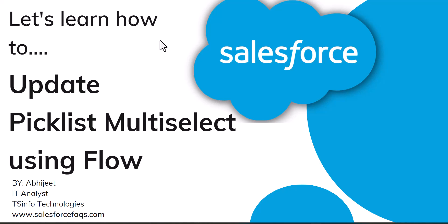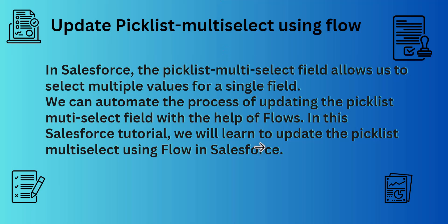Hello everyone and welcome to the channel. Today in this video we will learn how we can update a multi-select picklist value using the Salesforce record trigger flow. In Salesforce, the multi-select picklist field allows us to select multiple values for a single field. We can update the values of this multi-select picklist field manually from the Object Manager, but we can also automate the process using a Salesforce flow.